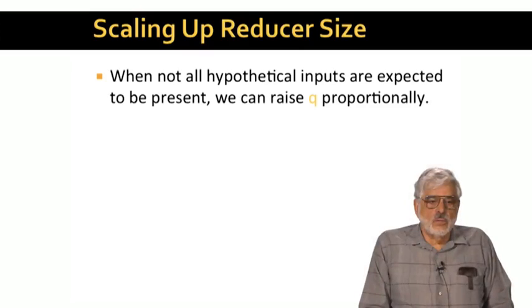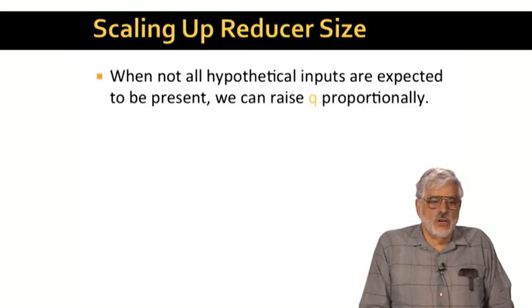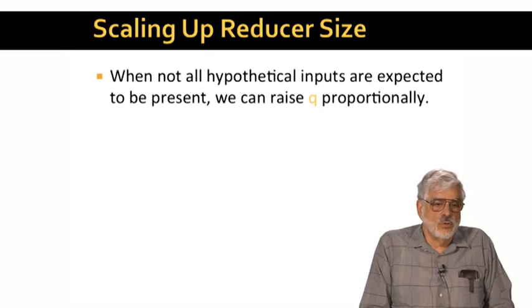Remember, hypothetical inputs are assigned to reducers when we design the algorithm. That is, the map function must be designed to generate certain key-value pairs, knowing only that its one input exists. We don't know in advance which inputs will be present. However, if we know what fraction of all possible inputs will be present, we can use a value of reducer size that is larger than we want the actual number of inputs to a reducer to be.